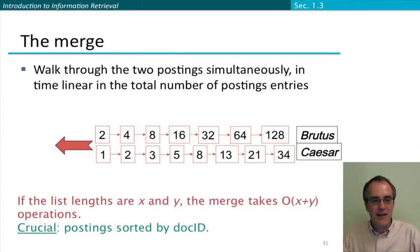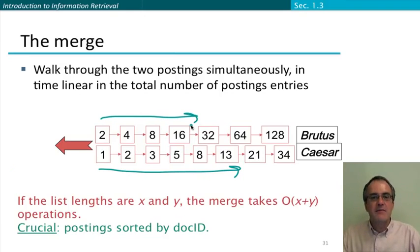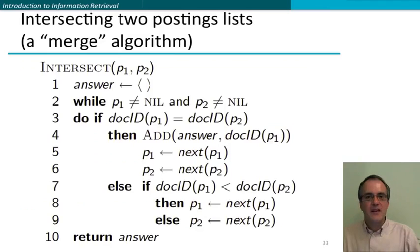So I hope we went through that carefully enough that you can see that if the list lengths are x and y, then this merge algorithm takes big O of x plus y time. It's linear in the sum of the lengths of the two postings lists. And you should also have seen what's crucial to make this operation linear. What's crucial to making it linear is the fact that these postings lists were sorted in order of document ID. Precisely because of that, we could do a linear scan through the two postings lists. If that hadn't been the case, then it would have turned into an N squared algorithm.